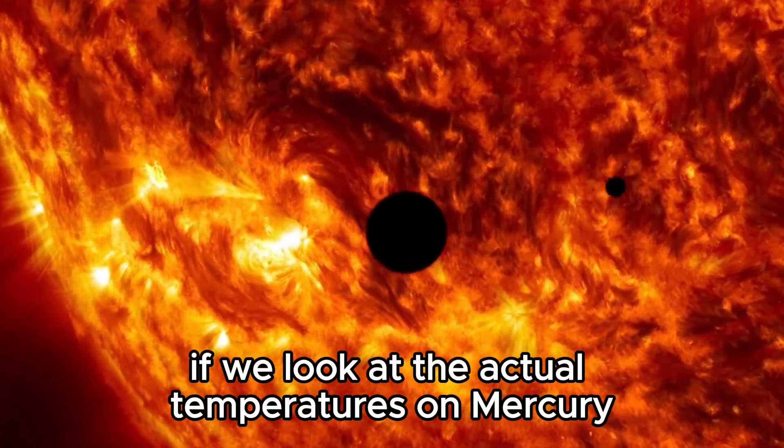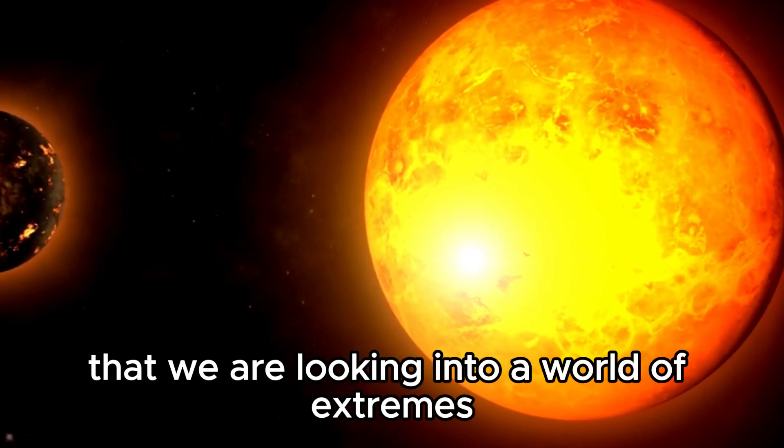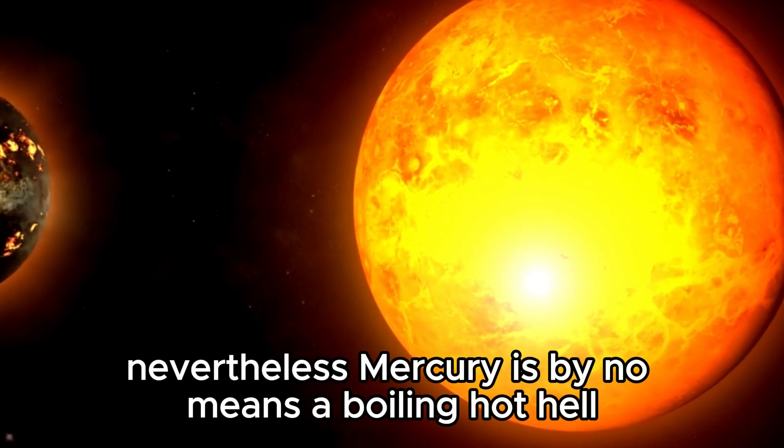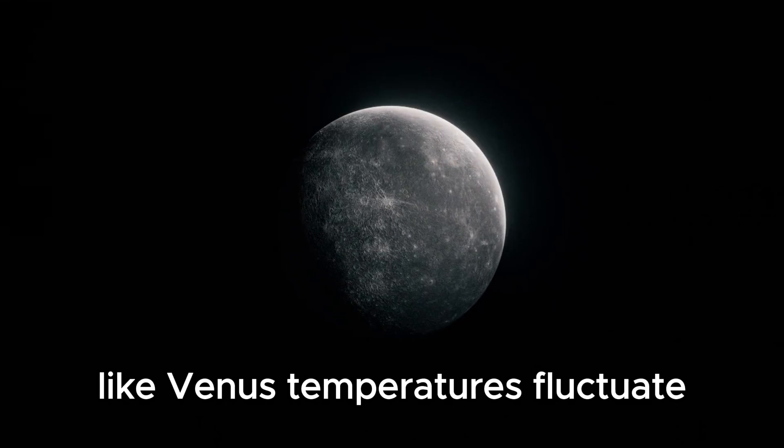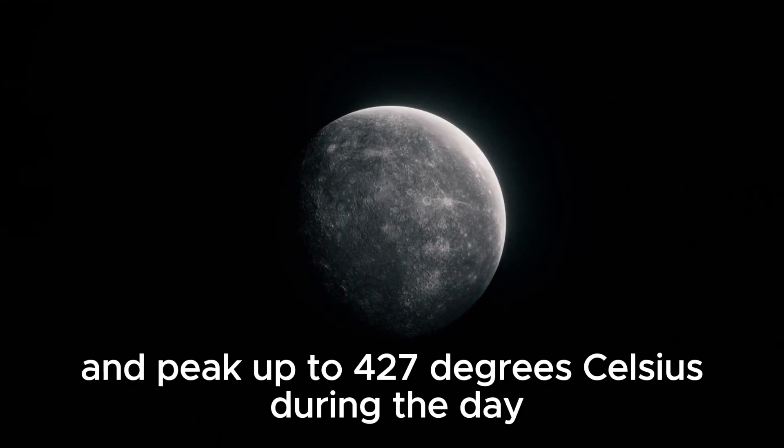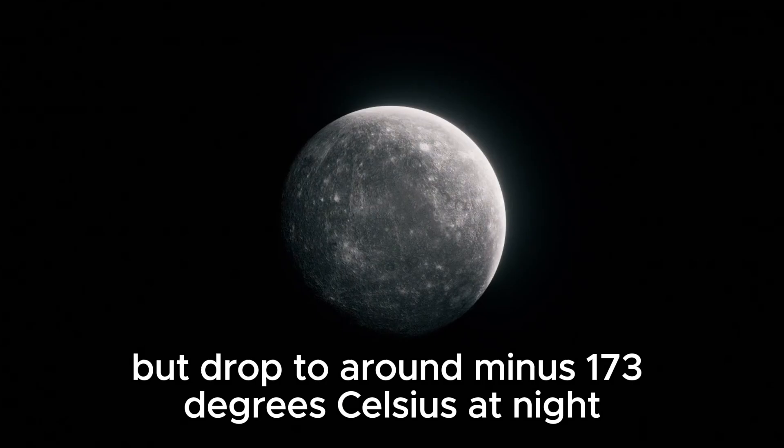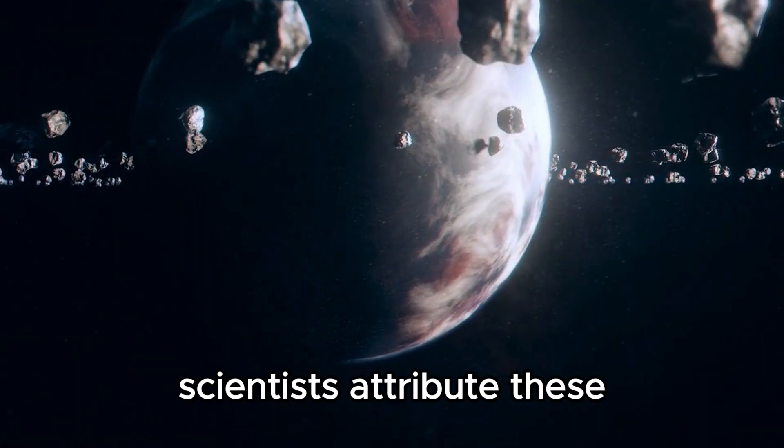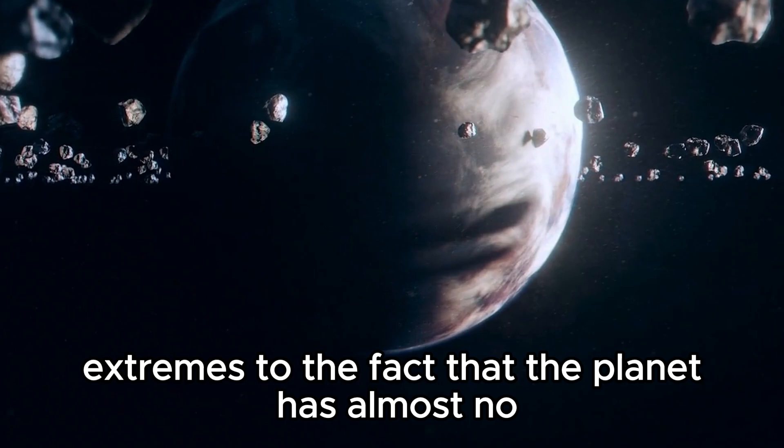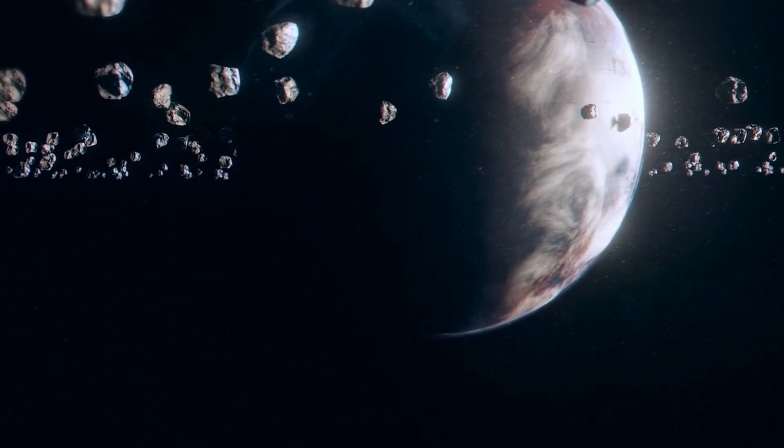If we look at the actual temperatures on Mercury, it quickly becomes clear that we are looking into a world of extremes. Nevertheless, Mercury is by no means a boiling hot hell like Venus. Temperatures fluctuate and peak up to 427 degrees Celsius during the day but drop to around minus 173 degrees Celsius at night.